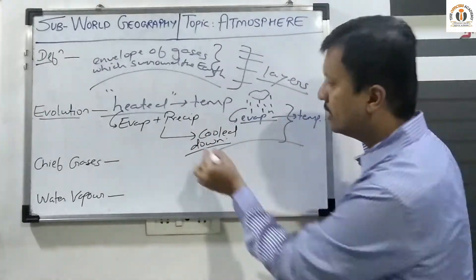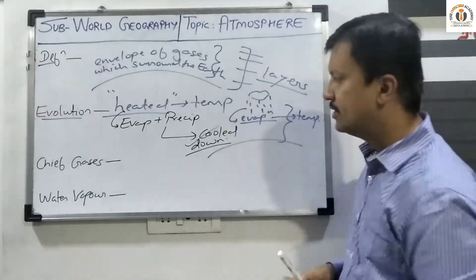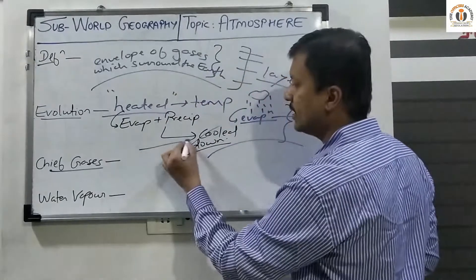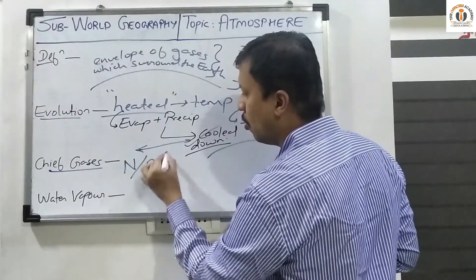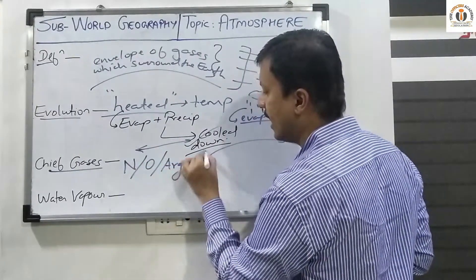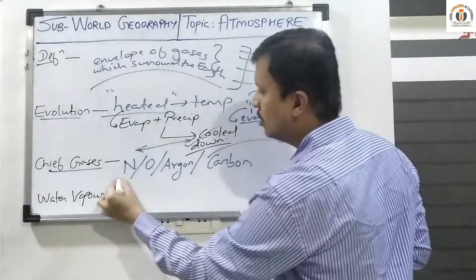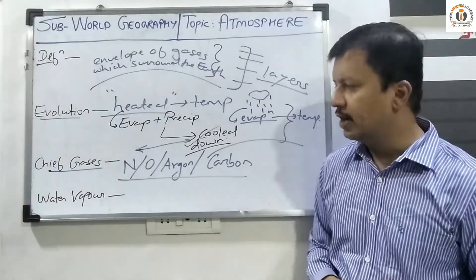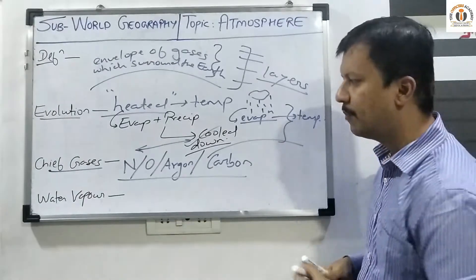The atmosphere in which we survive today consists of these cooled-down layers. The chief prominent gases present in the atmosphere are nitrogen, oxygen, argon — which is an inert gas — and carbon dioxide.